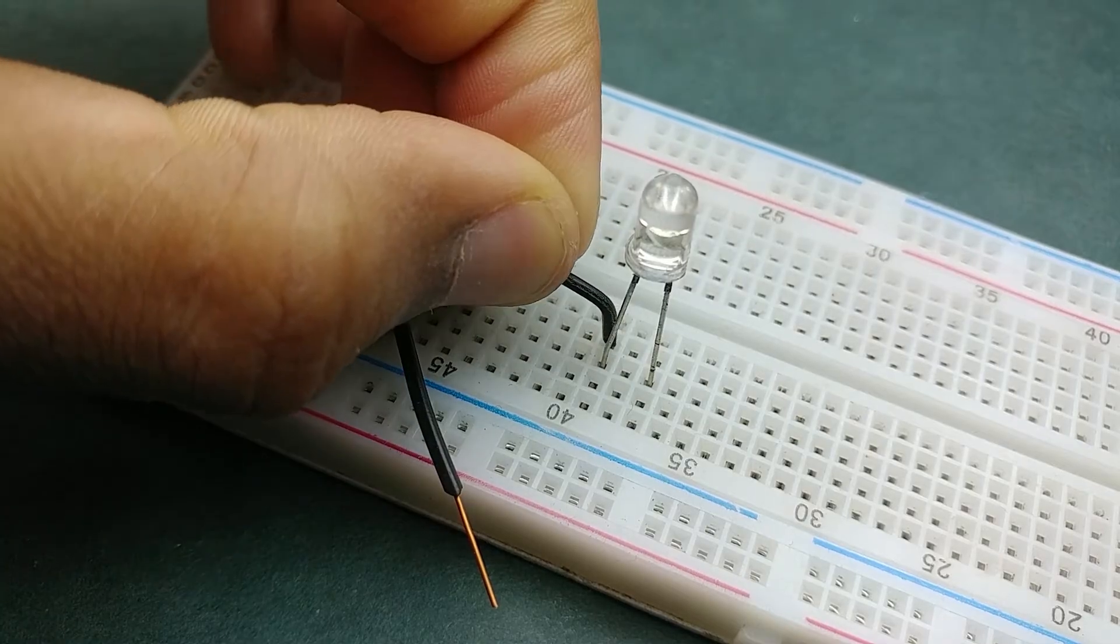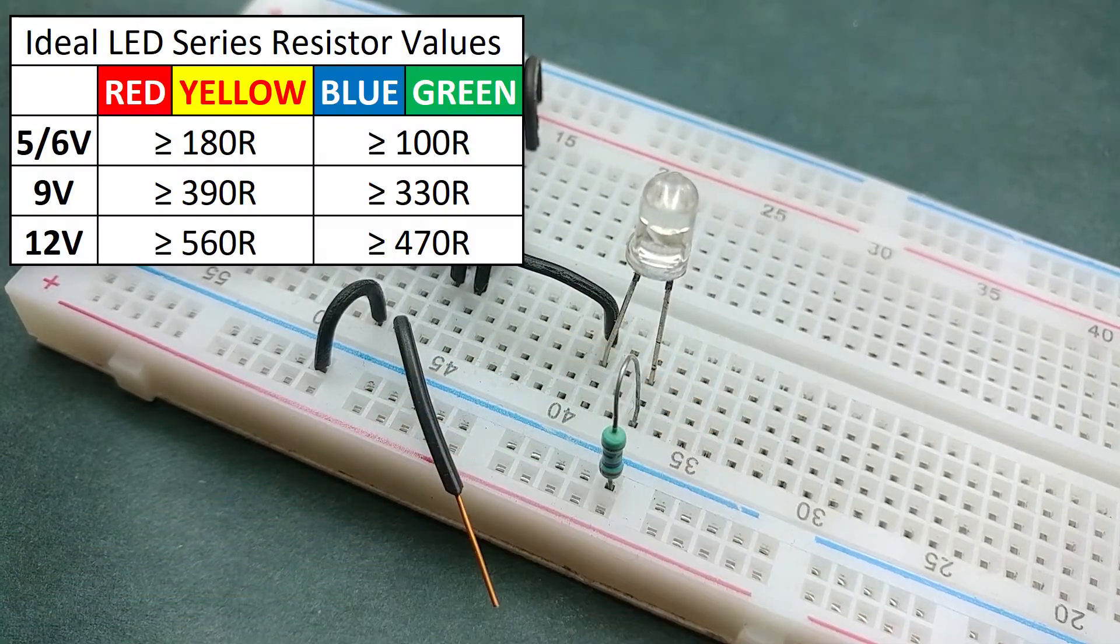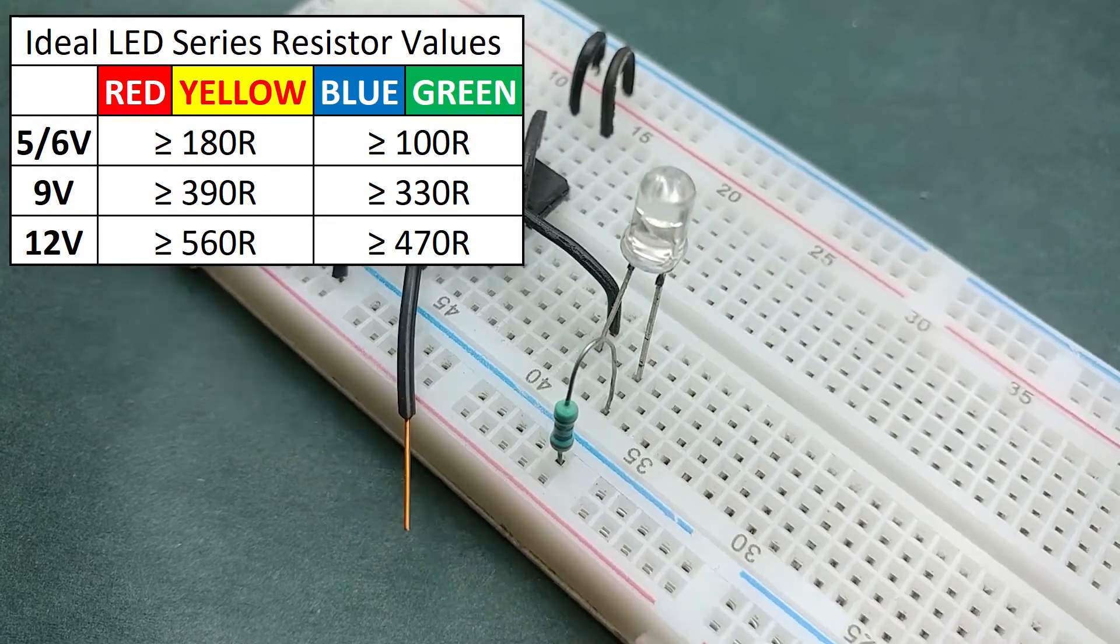Connect its anode to the output of 555 timer IC and its cathode to negative rail via a series resistor. Find out the value of this resistor from this table.